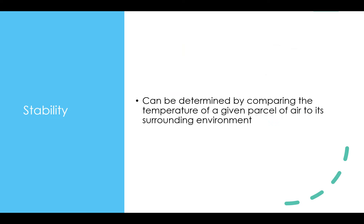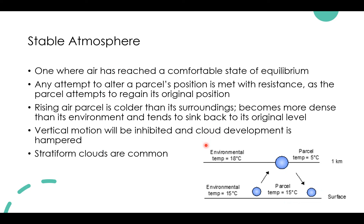We need to examine the stability of the atmosphere, determined by comparing the temperature of a given parcel of air to its surrounding environmental air temperature. In a stable atmosphere, air has reached a comfortable state of equilibrium. Any attempt to alter an air parcel's position is met with resistance as the parcel attempts to regain its original position. A rising air parcel that is colder than its surroundings becomes denser and tends to sink back to its original position. Vertical motion in a stable atmosphere is generally inhibited or suppressed, and cloud development is hampered. Stable atmospheres typically feature more stratiform-type clouds.